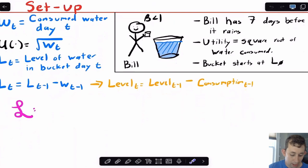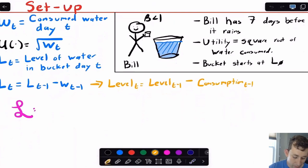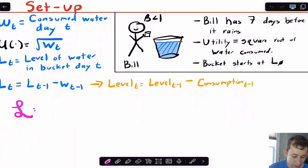Here's our setup. I'm just going to make a little bit of notation. I'm going to call the water that we consume on day T, WT. The utility function is the square root of water consumed, so that's the square root of WT. We got some level of water in the bucket in any day T. Basically whatever level I have in the bucket on any given day, it's just whatever level I had yesterday minus whatever amount of water I took out yesterday.